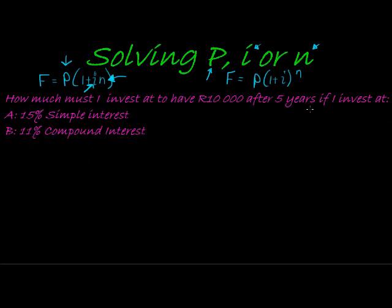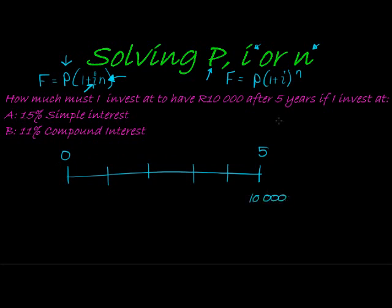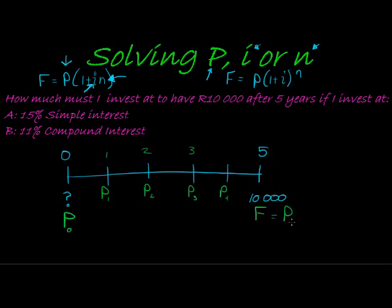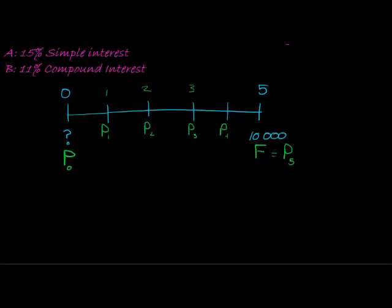Here's an example: how much must I invest to have 10,000 rand after five years? Always draw a timeline — it really helps. So we have time 0, 1, 2, 3, 4, 5. At time 5 we want 10,000 rand, and at time 0 we want to know how much to invest. On the timeline, the beginning always represents P (present value) and the end represents F (future value). We can also label each point P0, P1, P2, P3, P4, and P5.